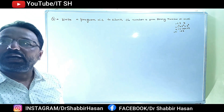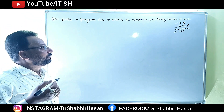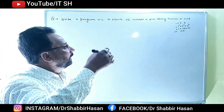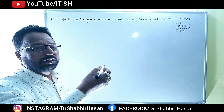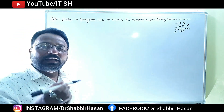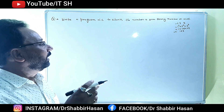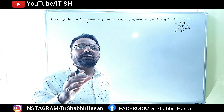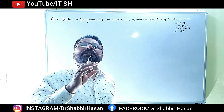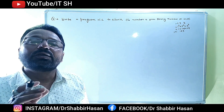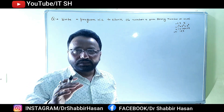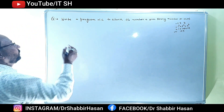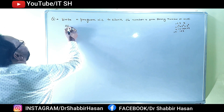तो चलिए इसके लिए सबसे पहले flowchart बनाते हैं। Armstrong number तो समझ गया आप - number जो भी होगा, उसके एक digit का cube निकालेंगे, फिर दूसरे digit का, फिर तीसरे digit का। और उसको जब निकाल लेंगे, तो सबको cube निकालेंगे, जोड़ेंगे - वो फिर number के बराबर आ जाना चाहिए। अगर number के बराबर आ जाता है तो ये Armstrong number है, नहीं तो Armstrong number नहीं।